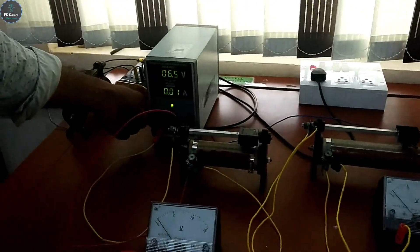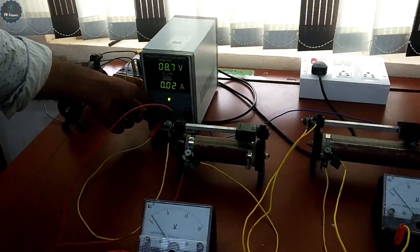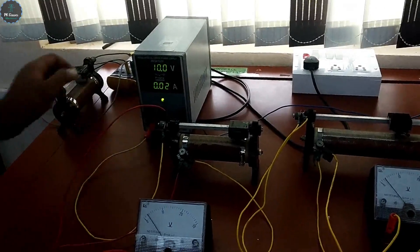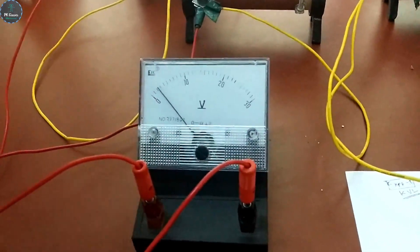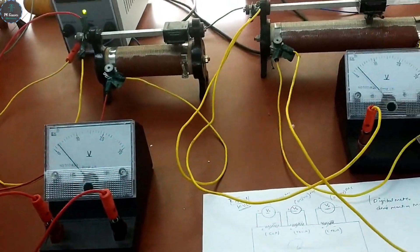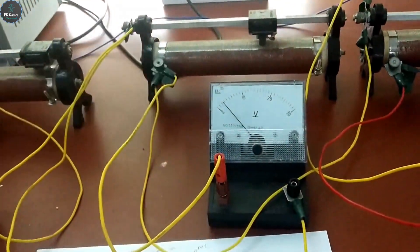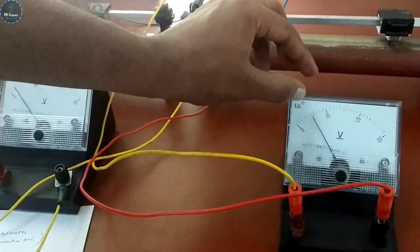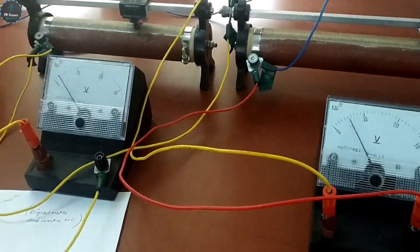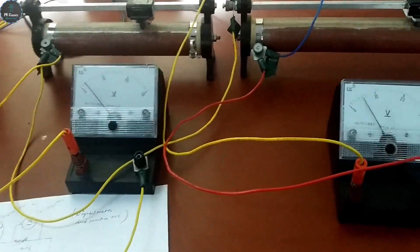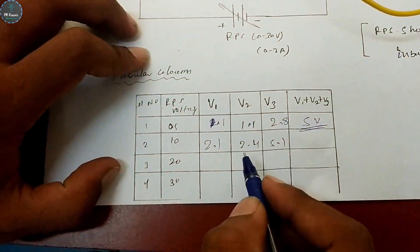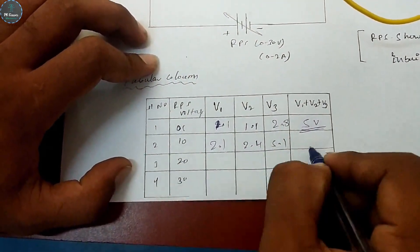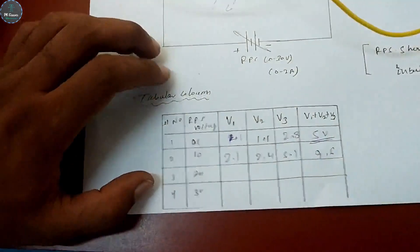Next, vary the RPS to 10 volts. Voltmeter V1 reads 2.1 volts, V2 reads approximately 2.4 volts, and V3 reads 5.1 volts. Adding: 5.1 + 2.4 + 2.1 = 9.6, which is almost equal to 10 volts. There is a slight variance because moving coil instruments introduce small errors; digital meters would give the exact value.